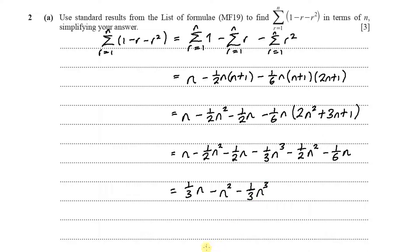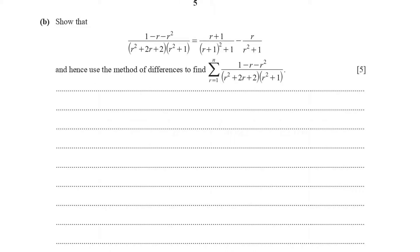That is the final answer for part A. Scrolling down to part B: show that the fraction (1 minus r minus r squared) over (r squared plus 2r plus 2)(r squared plus 1) equals (r+1) over (r+1)² plus 1, minus r over (r squared plus 1). Then hence use the method of differences to find the summation.